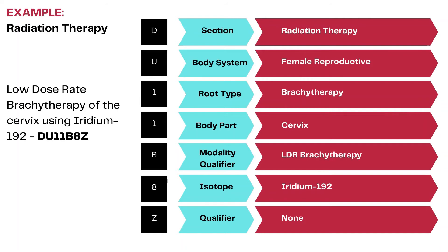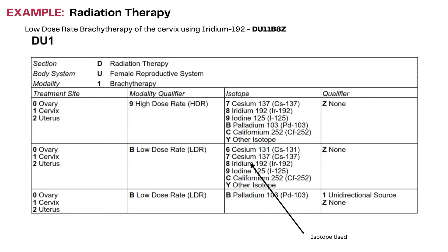This is an example of coding low dose rate brachytherapy of the cervix using iridium 192. The section value is D for radiation therapy. Body system is the female reproductive system because it's the cervix. Root type is brachytherapy. Body part is the cervix itself. Modality is low dose rate brachytherapy. Isotope for the sixth character is iridium 192. The qualifier is none. So the code would be D, U, 1, 1, B, 8, Z. This is the corresponding table for the procedure.